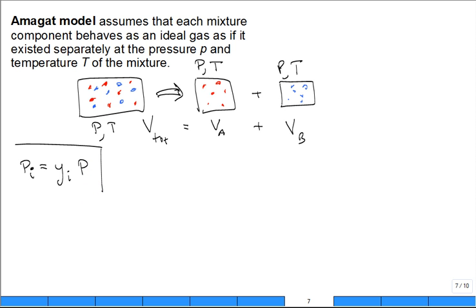Okay, how about this one? The partial volume is equal to y sub i times v total. You can get a similar result here. You're just going to use the ideal gas equation.